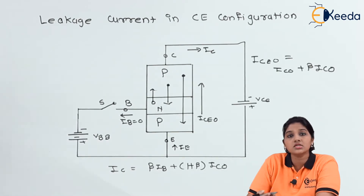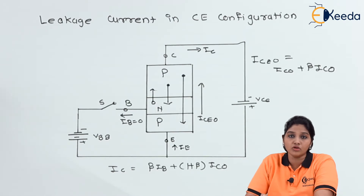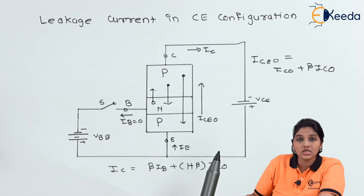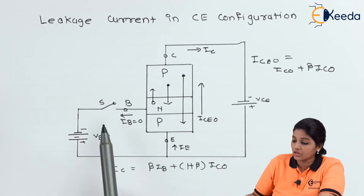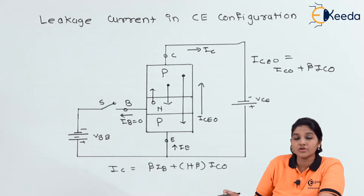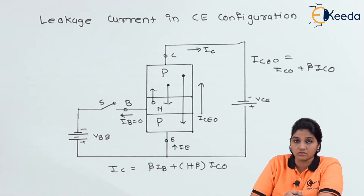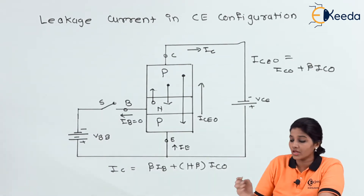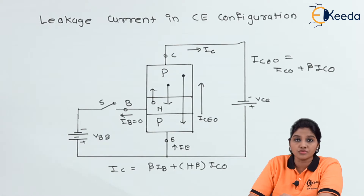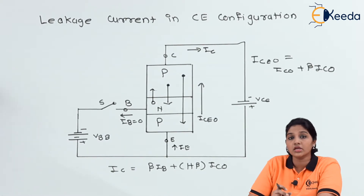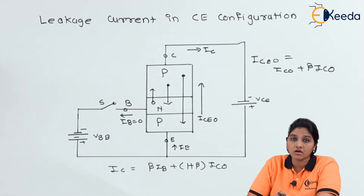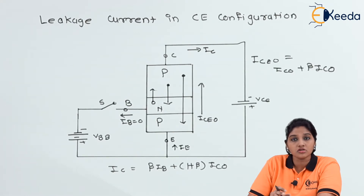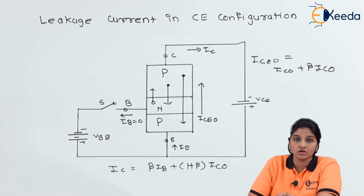Now when switch S is opened, the forward biasing of the base-emitter junction is disconnected. Because of that, the base current becomes equal to zero. But there is still a collector current due to thermally generated minority carriers, and that is called reverse saturation current or leakage current.